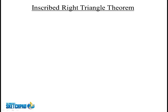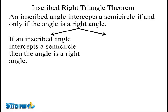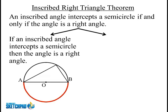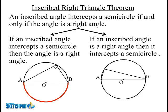So now back to the inscribed right triangle theorem. It says an inscribed angle intercepts a semicircle if and only if the angle is a right angle. So if an inscribed angle intercepts a semicircle, then the angle is a right angle. Basically, that intercepted angle up here is intercepting this semicircle, which is 180 degrees, so that guarantees it's going to be a right angle. Said differently, if an inscribed angle is a right angle, then it intercepts a semicircle.